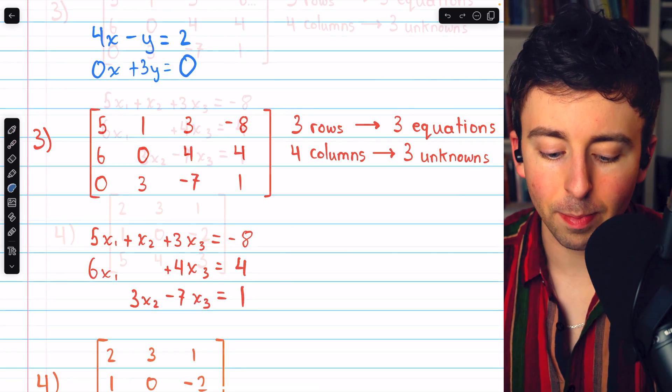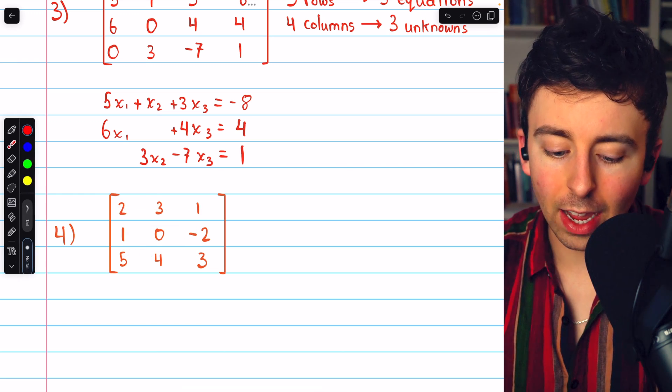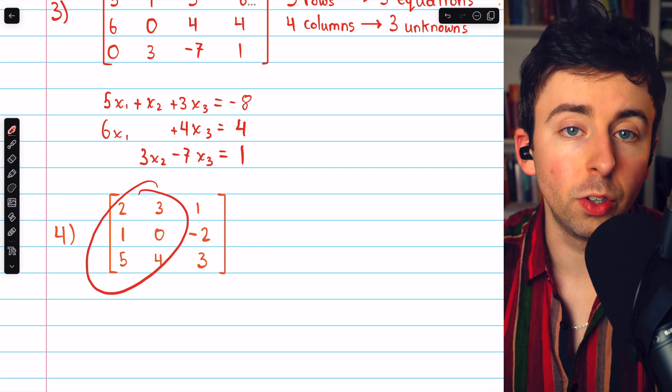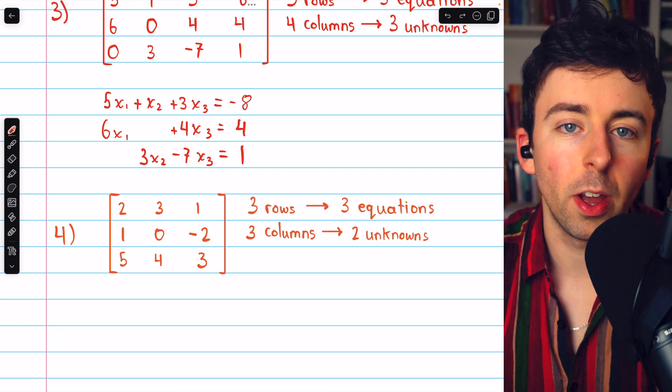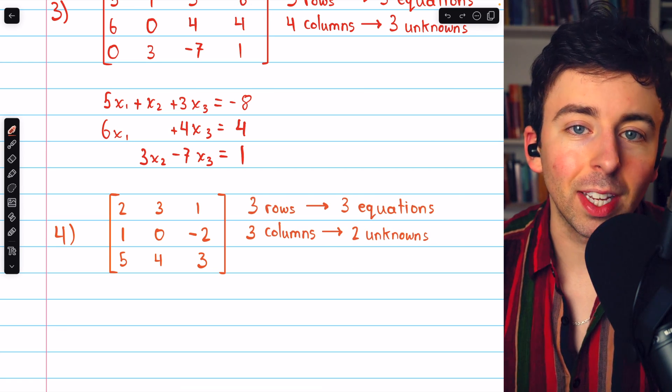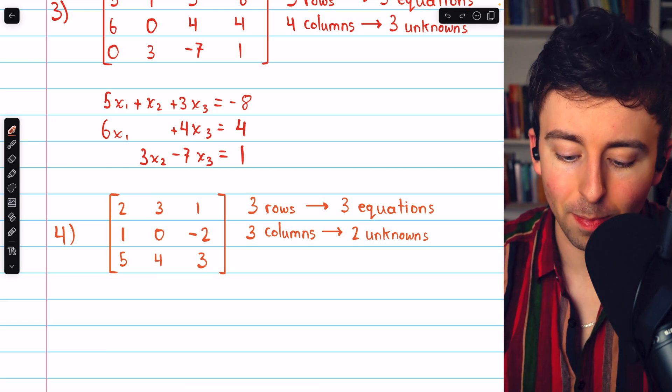Let's move on to our final example. This is a 3 by 3 matrix, so we'll have three equations, and we have enough columns for two unknowns. Again, X and Y are popular choices for those unknowns, though we will at times have occasion for other letters like A and B. Let's say we use A and B in this example.